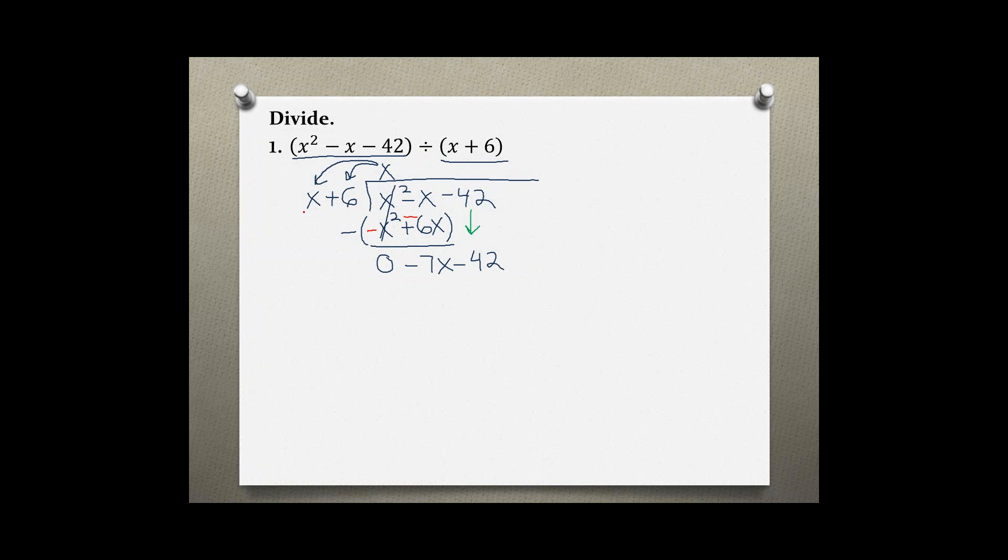I start all over again by looking at the two first terms of each polynomial, which is x and negative 7x. And I am asking myself, by what do I have to multiply x to get negative 7x? Negative 7.